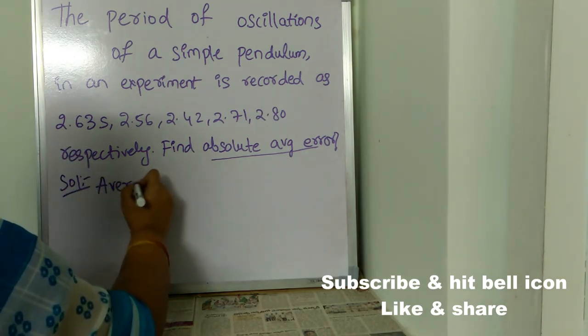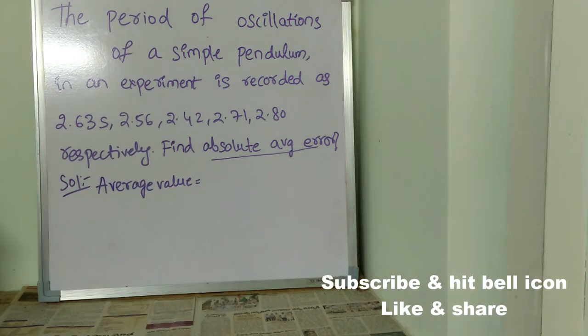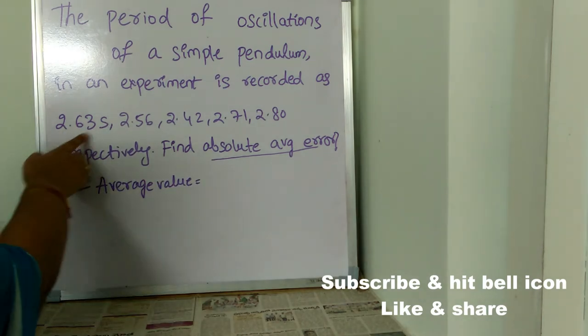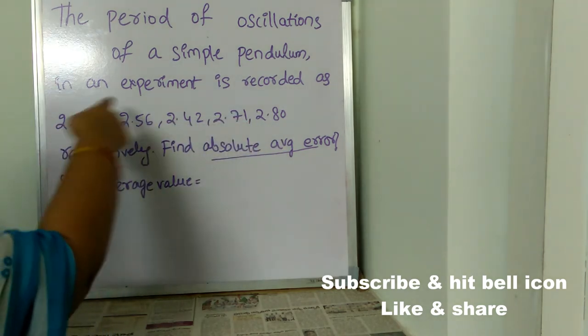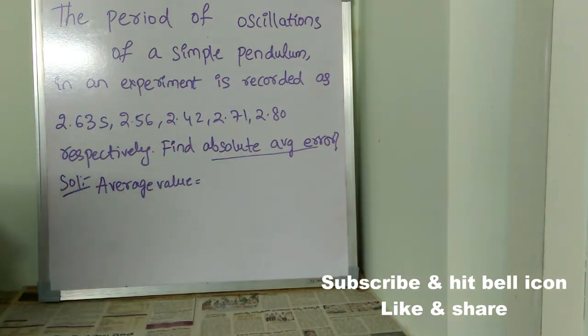Coming to the average value. How to find the average value? We just need to add all the given values divided by number of given values. See, I am explaining. First, in the numerator, we need to add sum of the values.